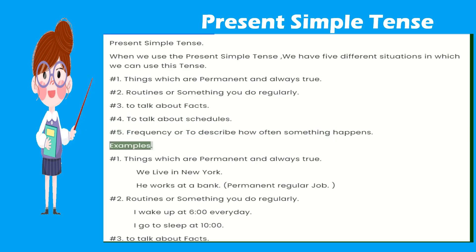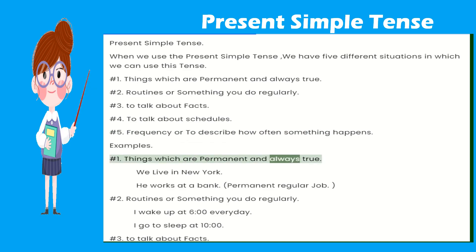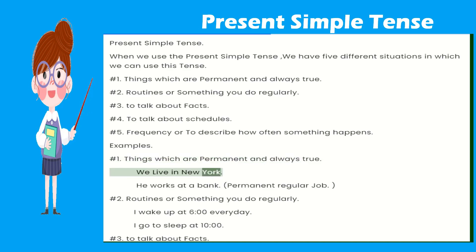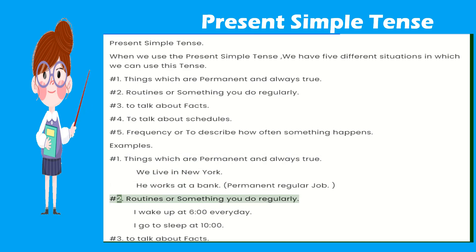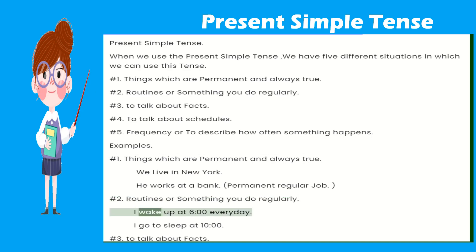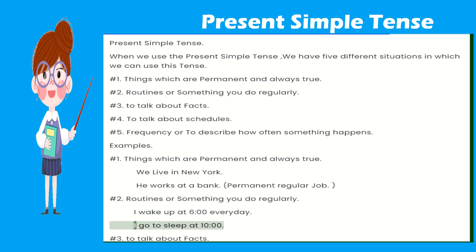Examples. Number one, things which are permanent and always true: We live in New York. He works at a bank. Number two, routines, something you do regularly: I wake up at six o'clock every day. I go to sleep at ten o'clock.